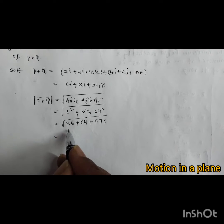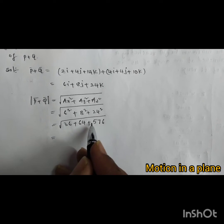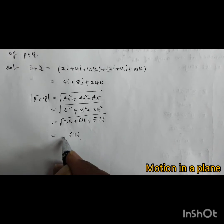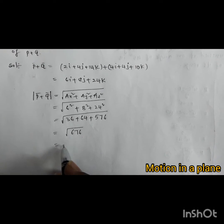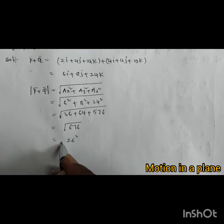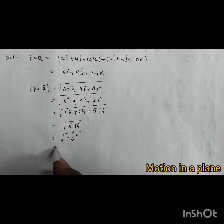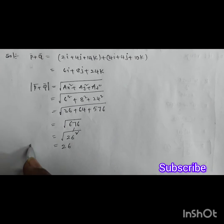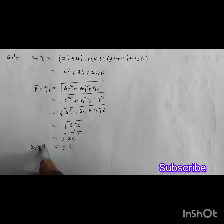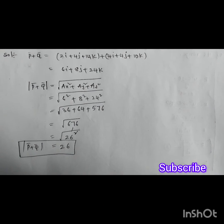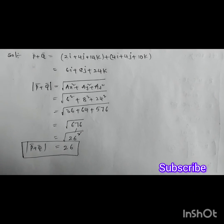36 plus 64 plus 576 equals 676 under root. This is 676 under root means 26 squared. The square root is cancelled. Root 676 value is 26. This is the magnitude of p plus q is 26.